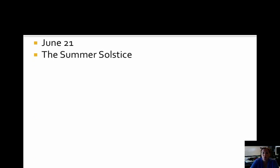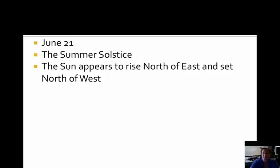We're going to start with our first main date, which is June 21st, which of course is the summer solstice. Let's review some important information about this date. On this date, the sun appears to rise north of east and set north of west. We're going to draw this in a minute, but first let's copy this information into our notes and put it into our chart.